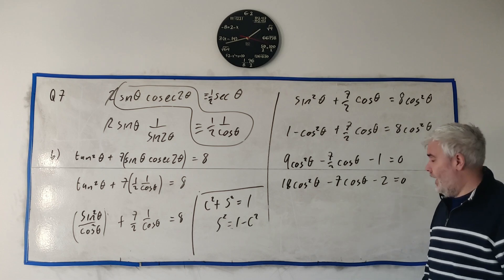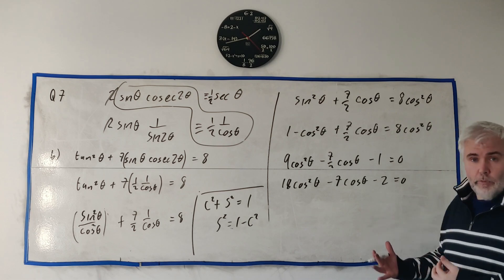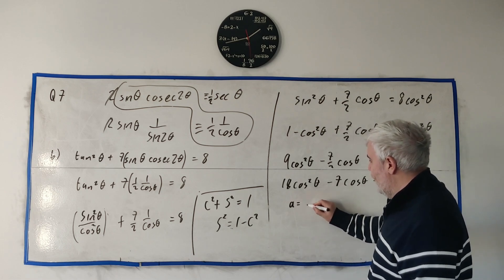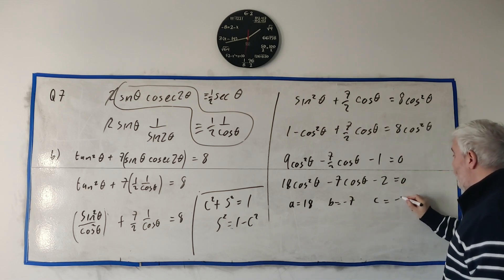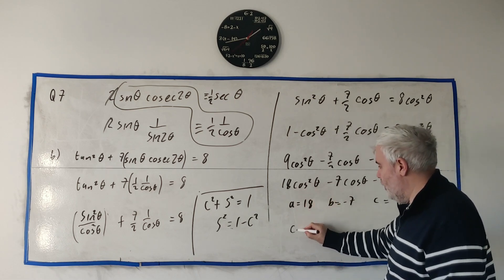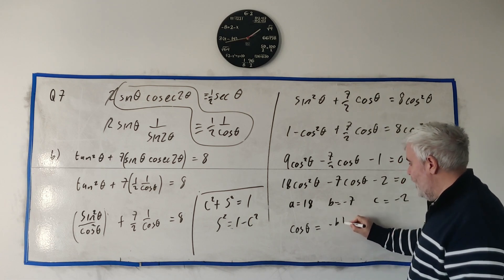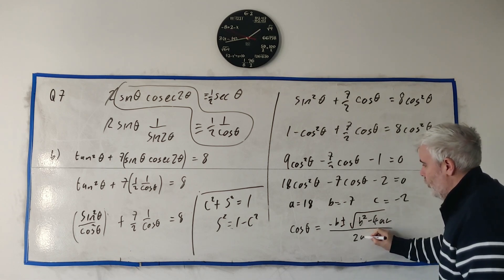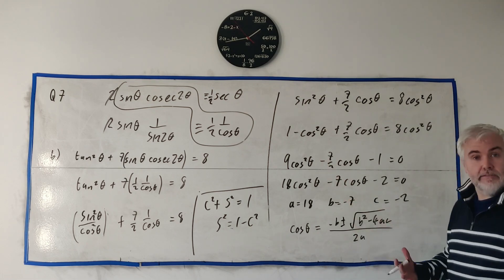Before we try and solve this, I just get rid of all the fractions. Make it a bit easier. Multiply everyone by 2. That's 18 cosine squared minus 7 cosine minus 2 equals 0. Now, try factorize it. It's tantalizing because there's lots of factors to 18. I don't see one. So we're going to use the minus B formula to solve this.